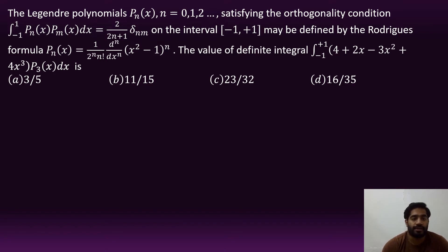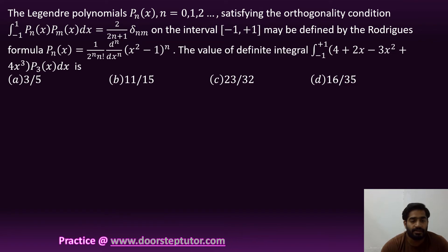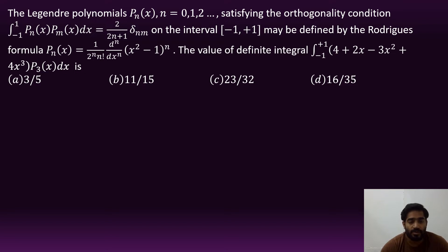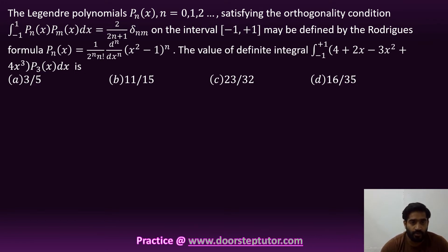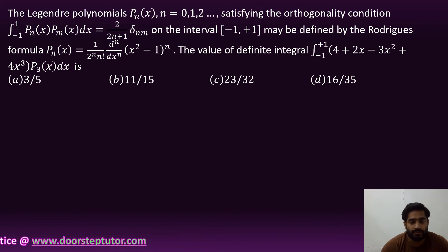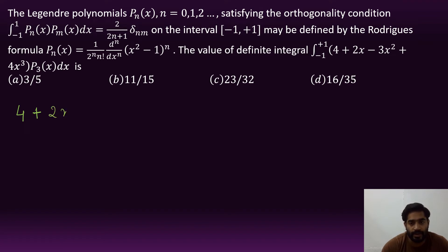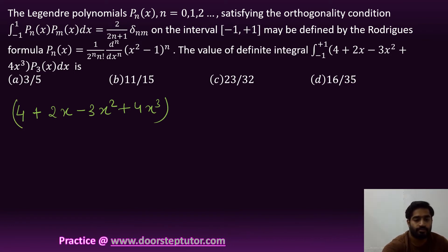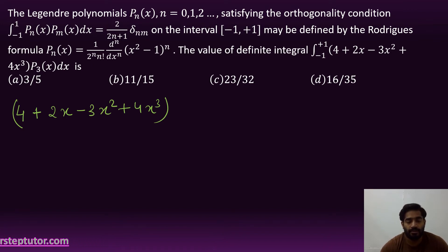We need to find the integral involving 4 + 2x − 3x² + 4x³. We have two options: substitute P3 directly and integrate, which is easiest, or use Rodrigues' formula. We will convert 4 + 2x − 3x² + 4x³ into a linear combination of Legendre polynomials. Since the maximum power is 3, we expand up to P3.